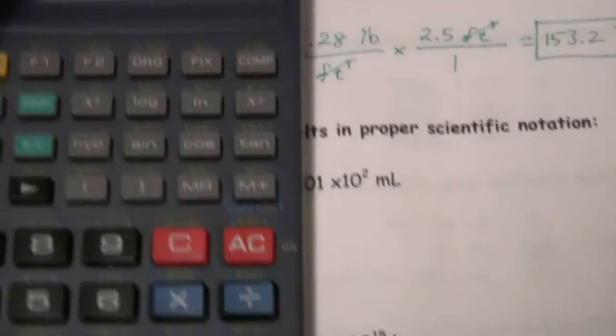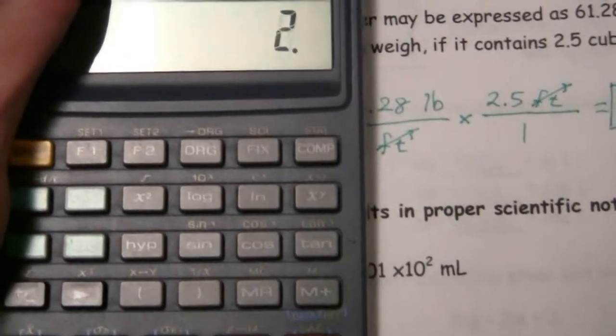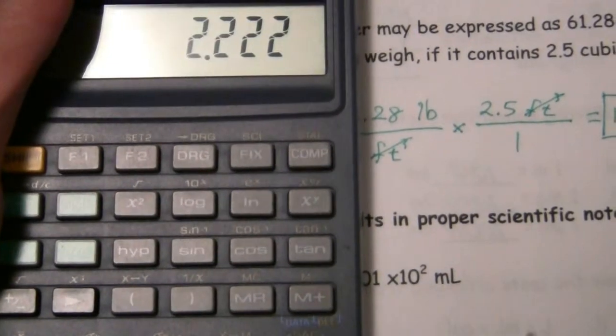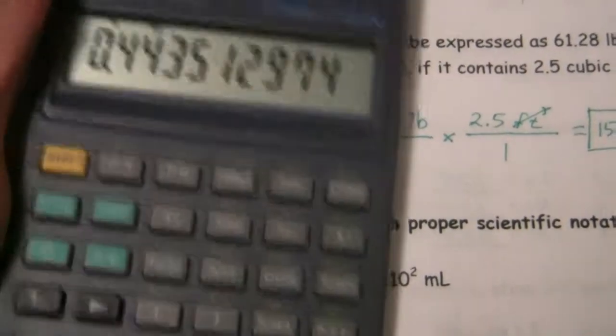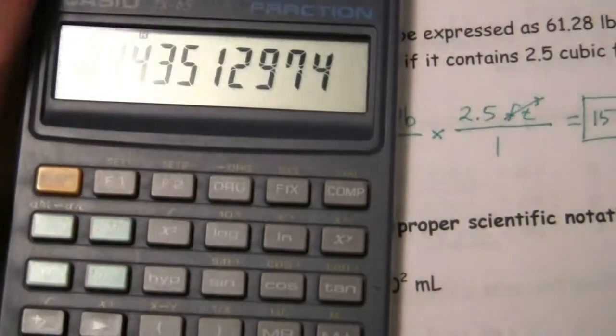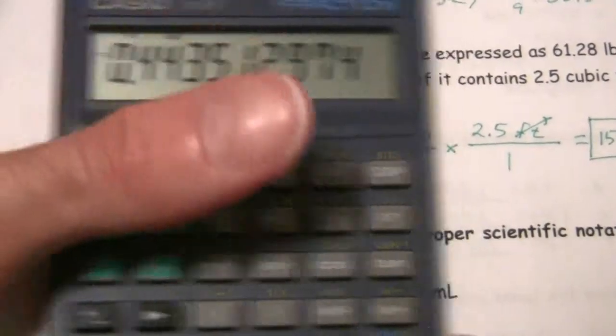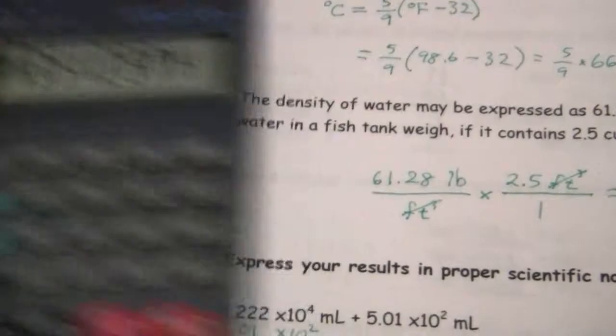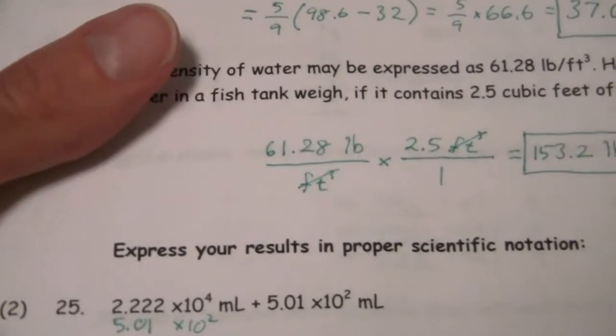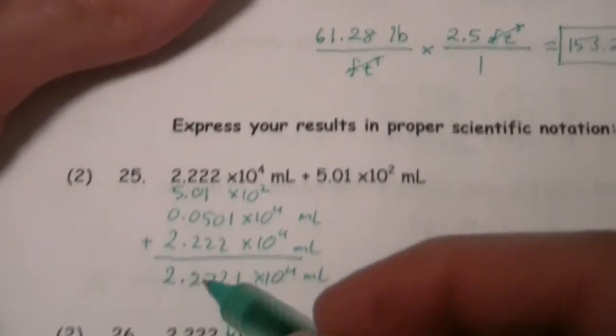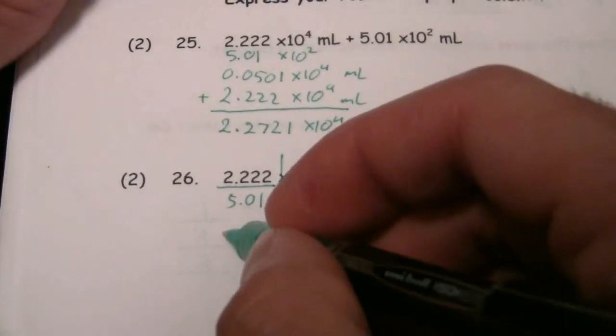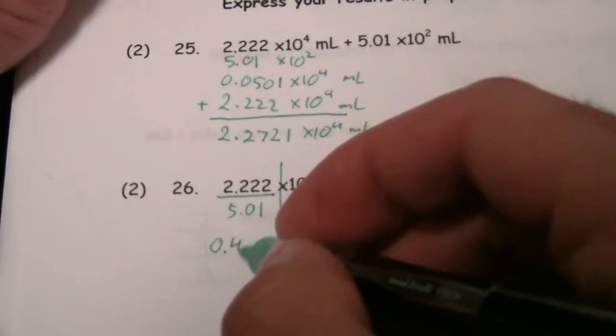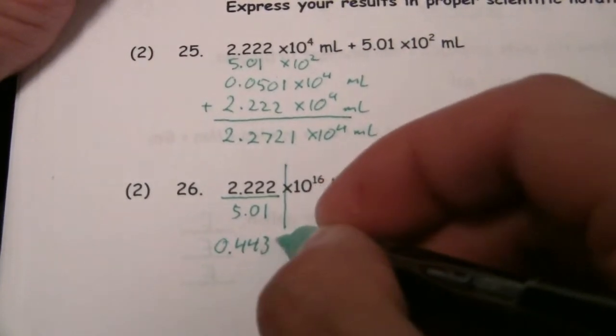So first of all, 2.222 divided by 5.01, and we get 0.4435. Other numbers there, but we don't need to go more than what we're given here.